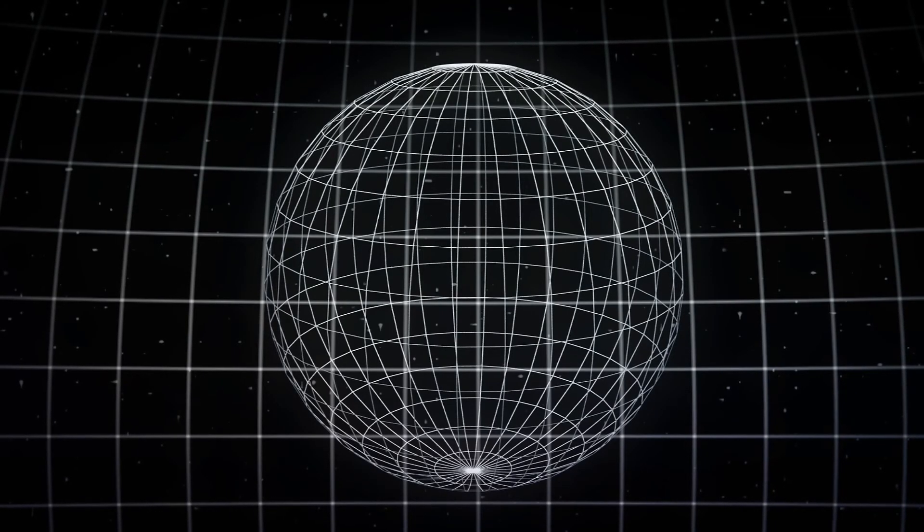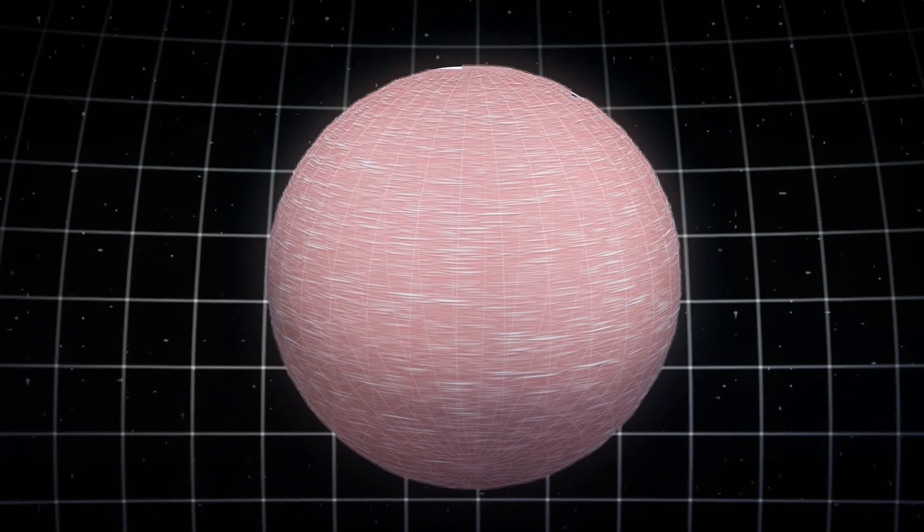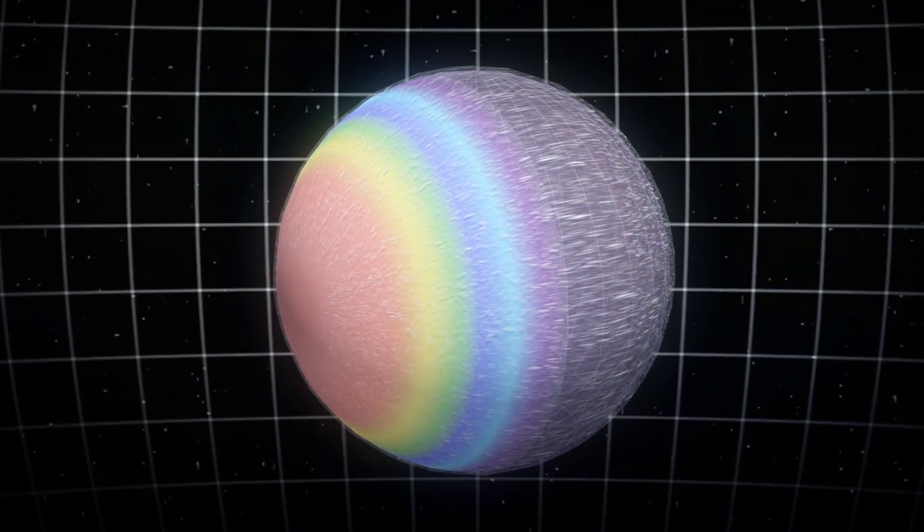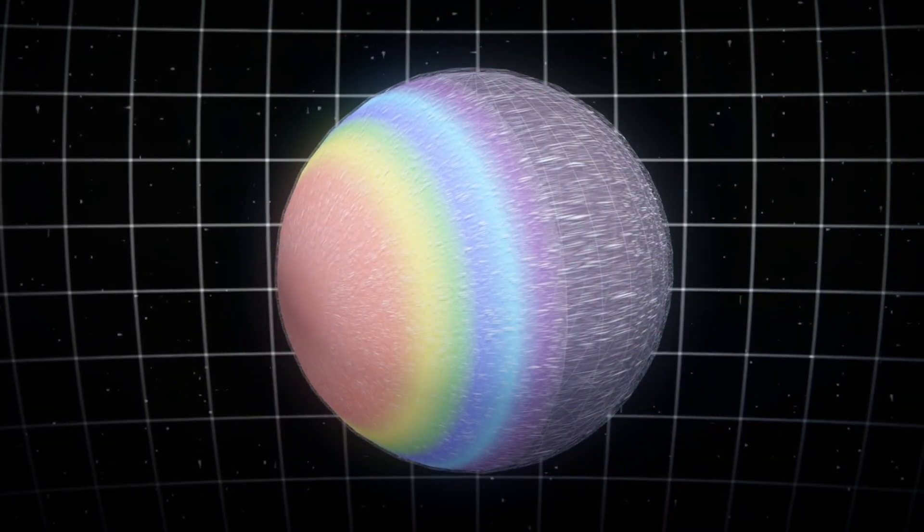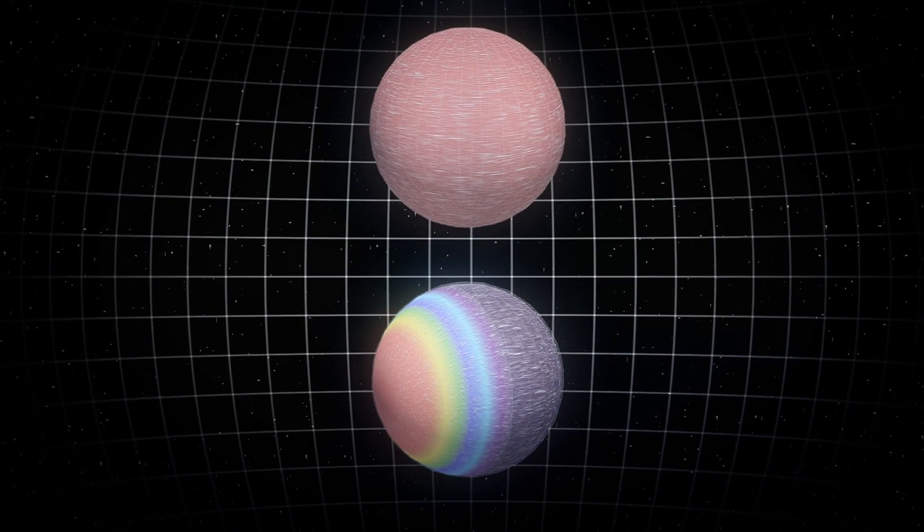While the exact conditions on TOI-700d are unknown, researchers at NASA's Goddard Space Flight Center created models to explore its potential conditions to help narrow future predictions of the planet's atmosphere. One model showed a water-covered world, and the other a completely dry version of today's Earth.